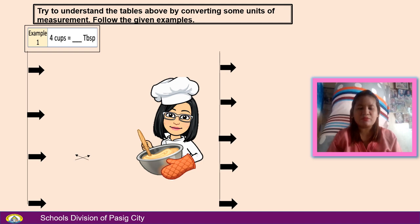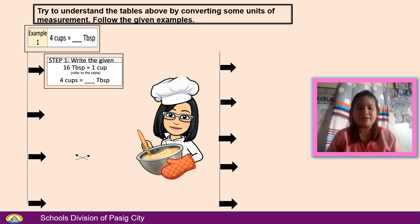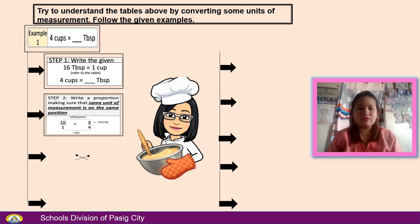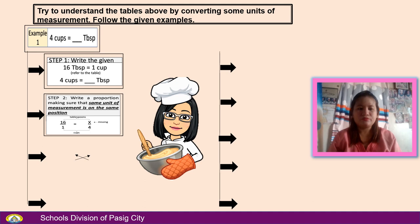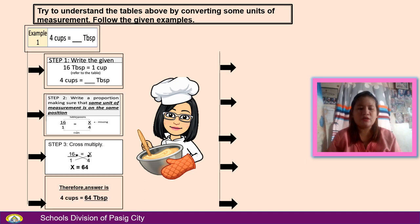Try to understand the tables by converting some units of measurement. Follow the given examples. Sample number 1: 4 cups equals blank tablespoons. Step 1: Write the given — refer to the table, 16 tablespoons equals 1 cup. Step 2: Write a proportion making sure the same unit of measurement is in the same position: 16 over 1 equals x over 4. Step 3: Cross-multiply. Multiply x by 1 equals x. Multiply 16 by 4 equals 64. So x equals 64. Therefore, 4 cups equals 64 tablespoons.